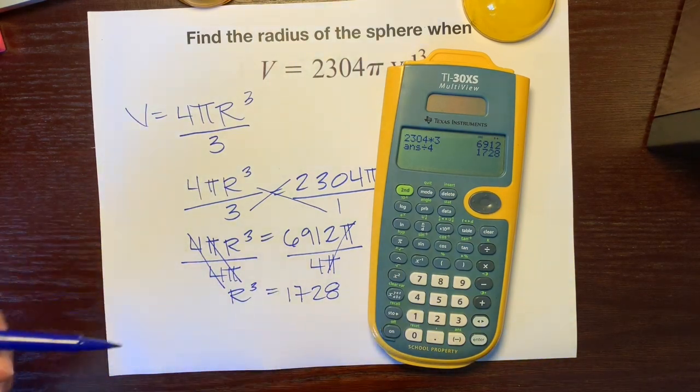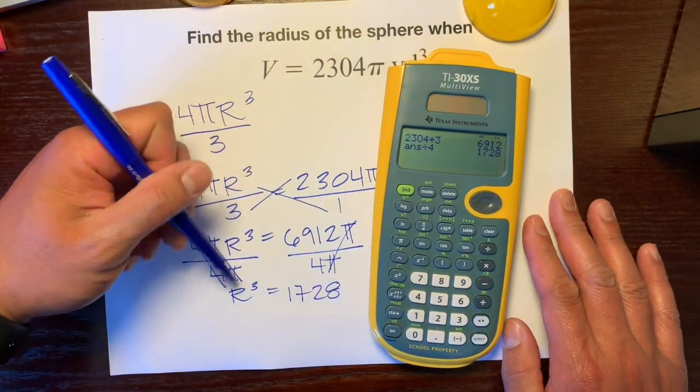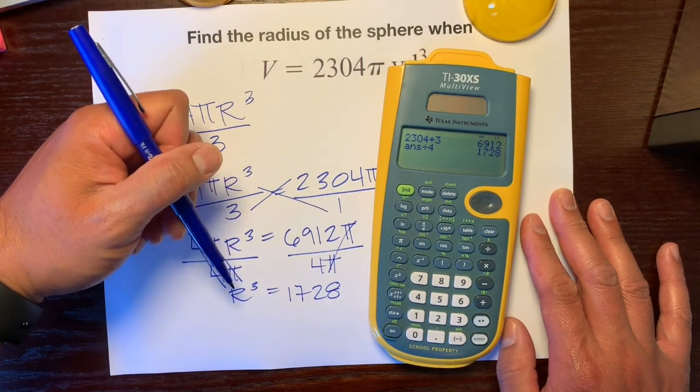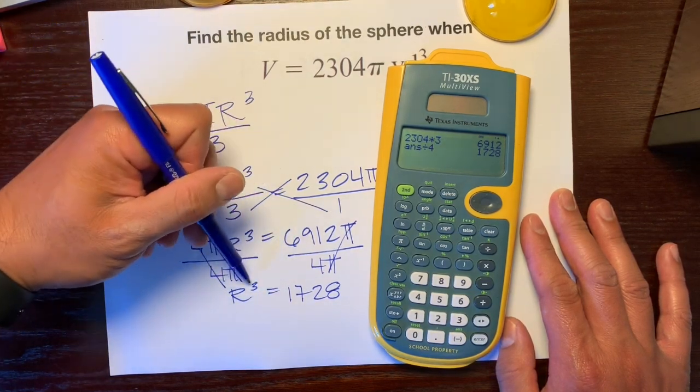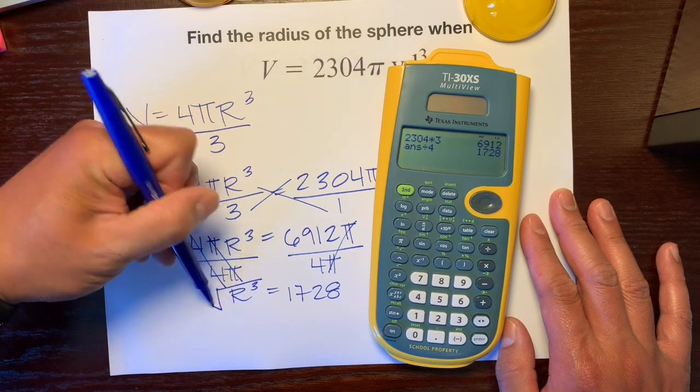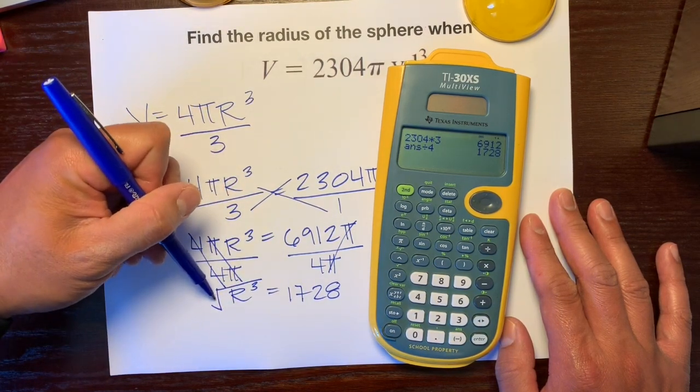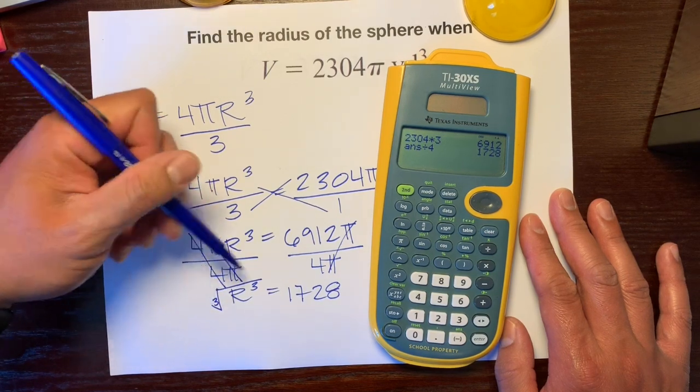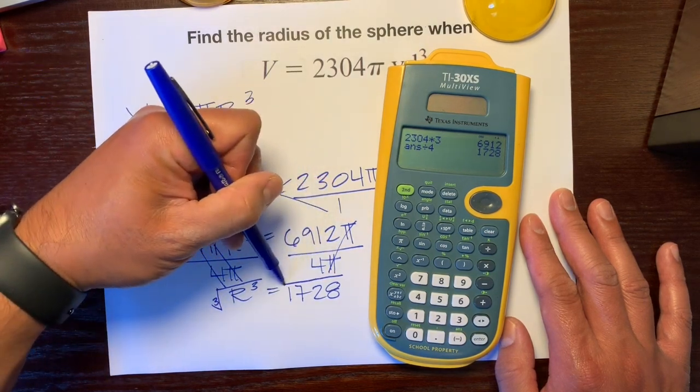So now our goal is to get r by itself. The opposite of cubing something is cube rooting, so we're going to draw this radical sign but put a little 3 down there for the cube root, and we're going to do the same thing over here.